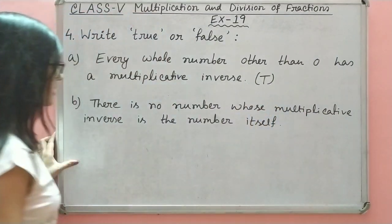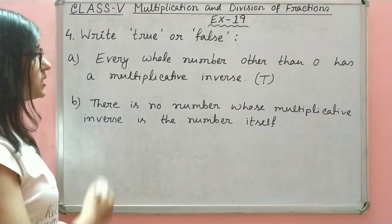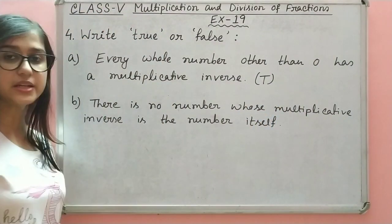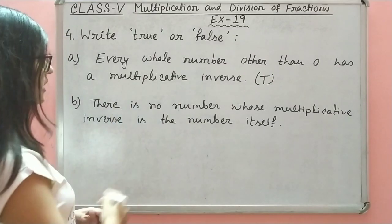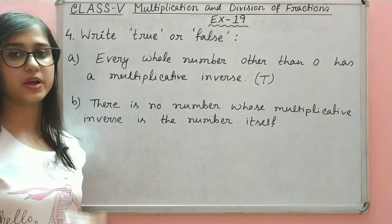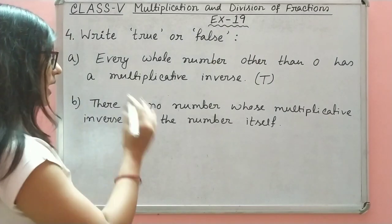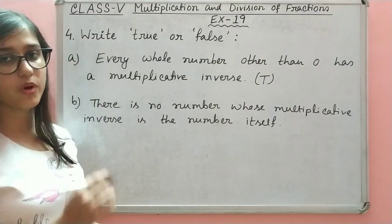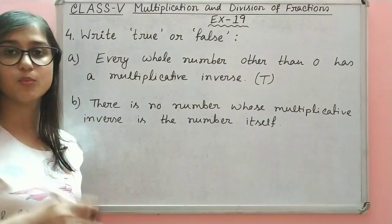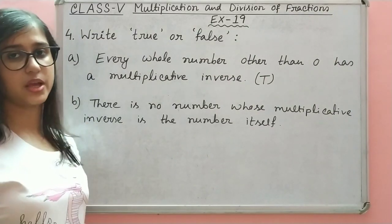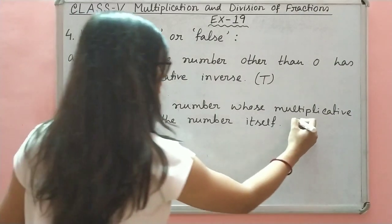There is no number whose multiplicative inverse is the number itself. So the statement says such a number does not exist. But if we look at 1, the multiplicative inverse of 1 is 1 itself. So this statement is false.